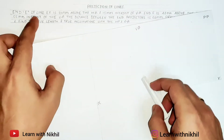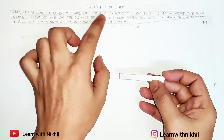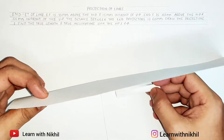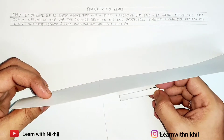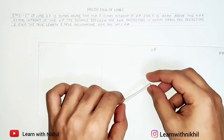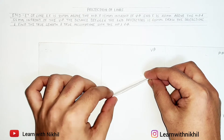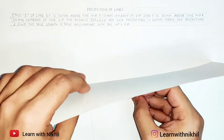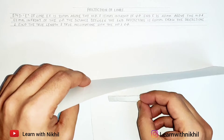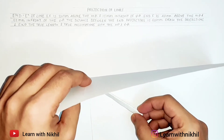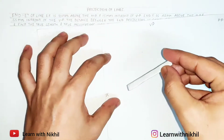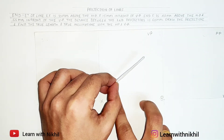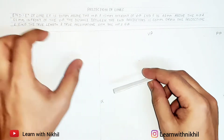Consider this as the line EF. Point E is 10 mm above the horizontal plane and 15 mm in front of the vertical plane. End F is 40 mm above the horizontal plane. So the line in the front view will look like this, and 55 mm in front of the vertical plane — so this is 15 and this is 55. In the top view the line will look like this. This distance is the end projector distance, that is the plan length distance, and the distance given is 60 mm.